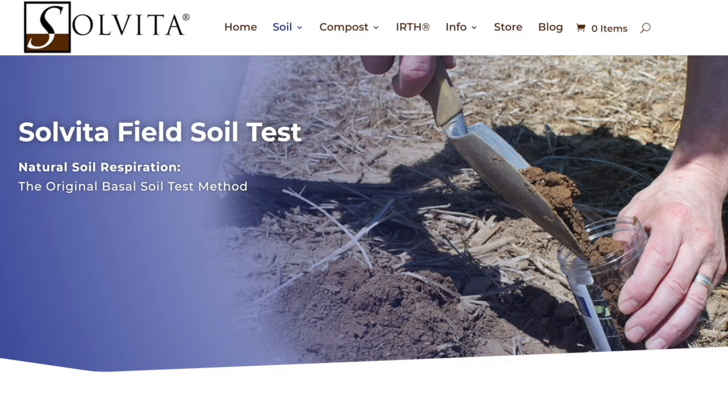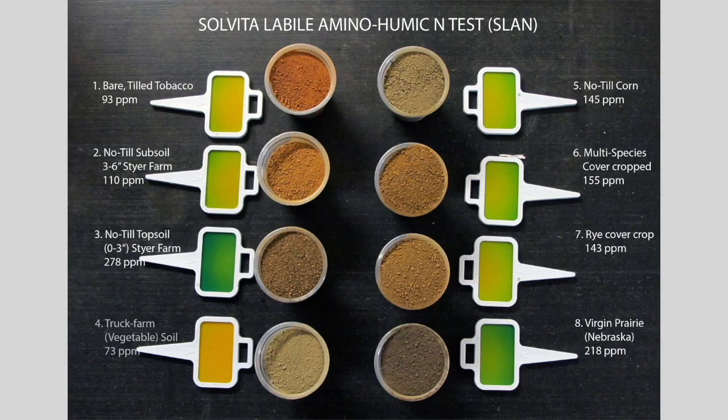Another part of the Haney test, which doesn't necessarily factor into the overall score, looks at the availability of nutrients using an extraction by organic acids to mimic natural extraction of nutrients by roots from the soil. There are also other commercially available soil health tests. One that a lot of people have probably heard of is Solvita. They've developed two tests: one is the CO2 burst test, which is a soil respiration test, and then there's SLAN — soluble labile amino nitrogen — which is basically an indication of nitrogen availability in the soil.